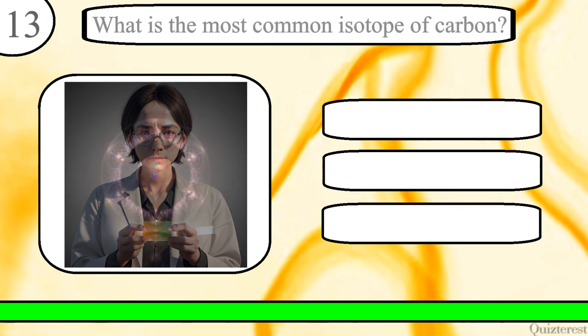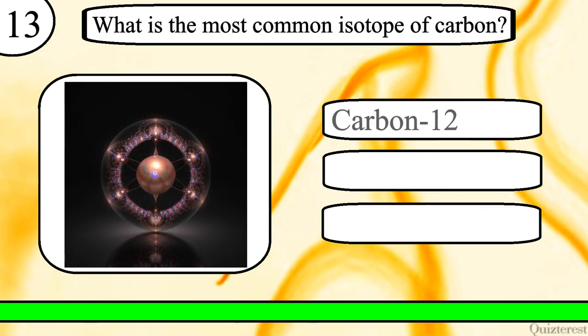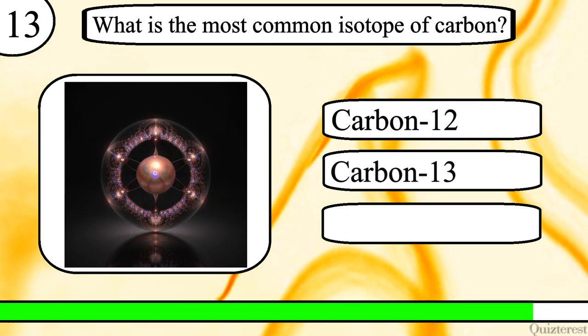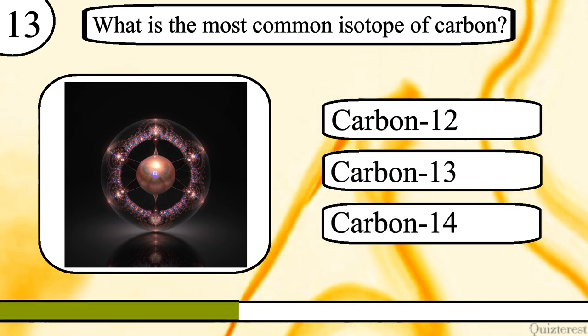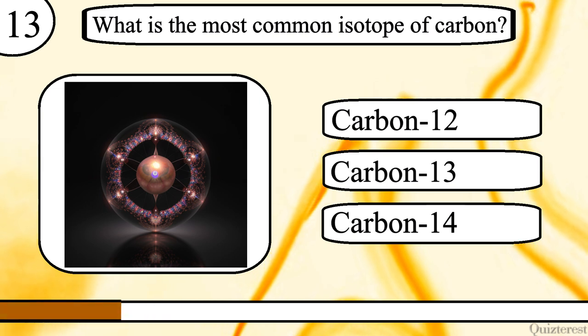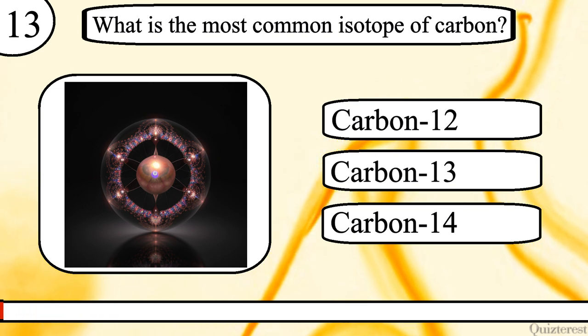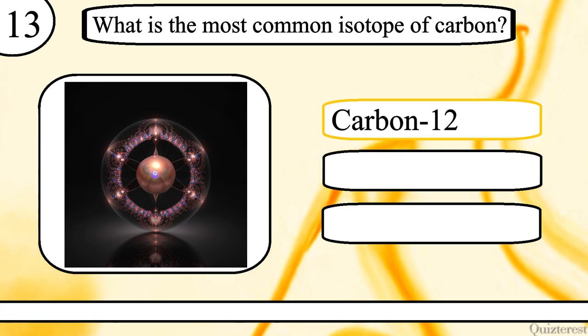Question 13. What is the most common isotope of carbon? Carbon 12, carbon 13, or carbon 14? The correct answer is carbon 12.